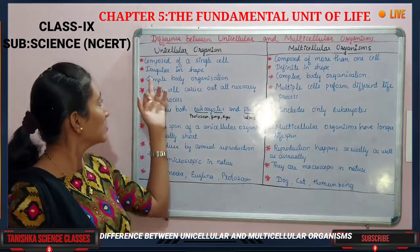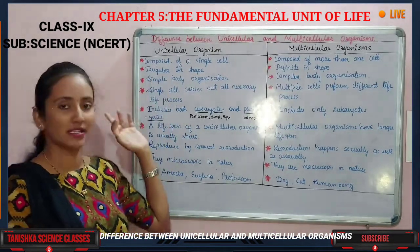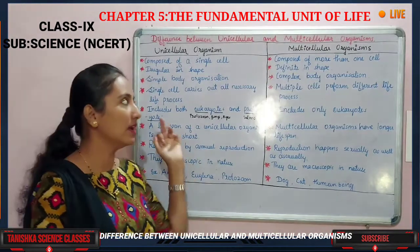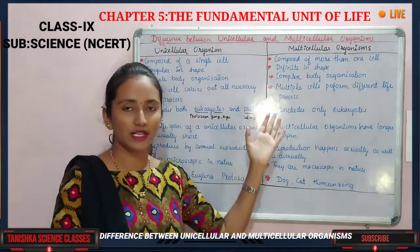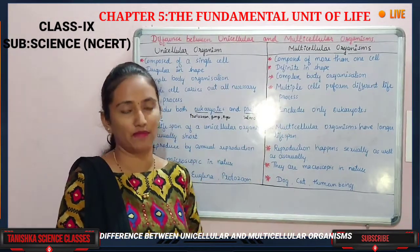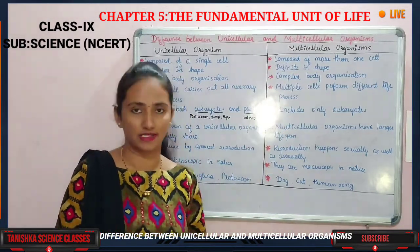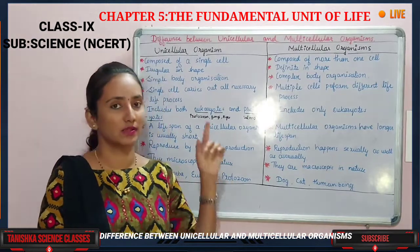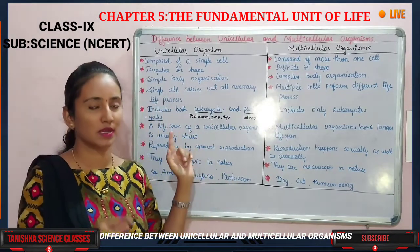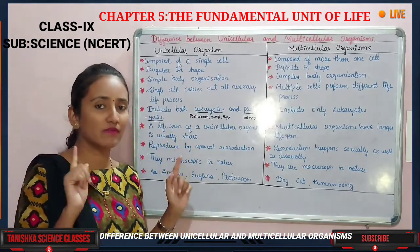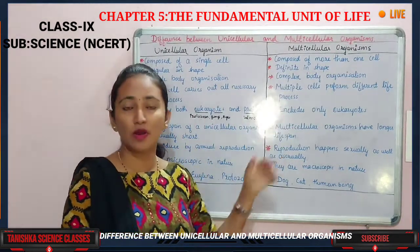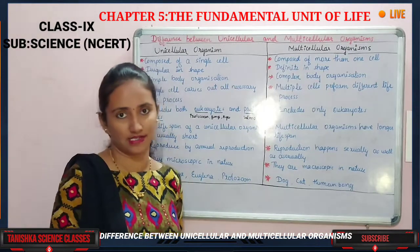The first difference: unicellular organisms are composed of a single cell, while multicellular organisms are composed of many cells.